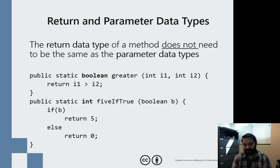One thing I typically see with students when they're starting to learn about methods is they want to have the same return type as their parameters. And it's actually the exact opposite. I don't have to have the same return type as my parameters. So here are some examples of that.